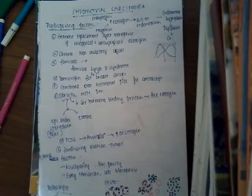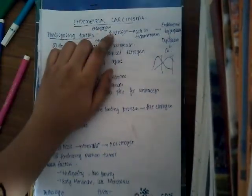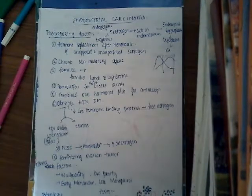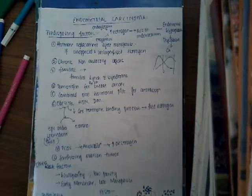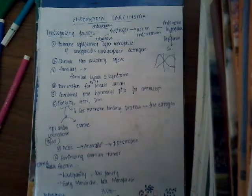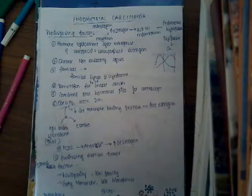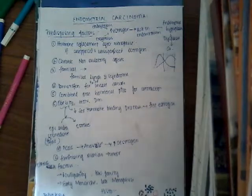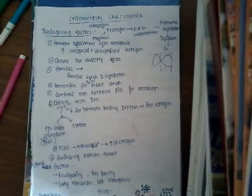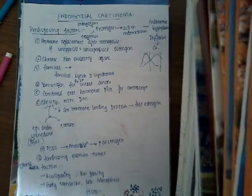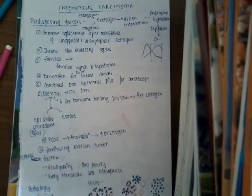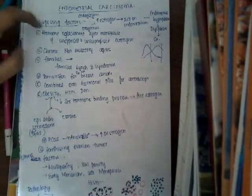Endometrial carcinoma is mainly due to estrogen. In our body, increased estrogen — whether endogenous or exogenous — acts on the endometrium and causes endometrial hyperplasia, leading to endometrial dysplasia and also carcinoma.